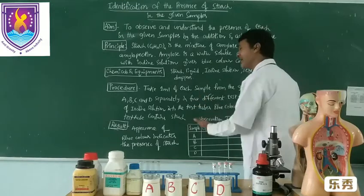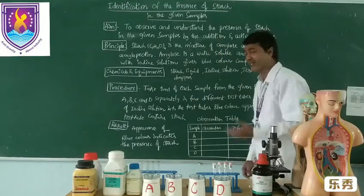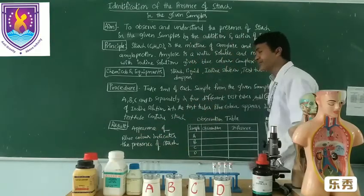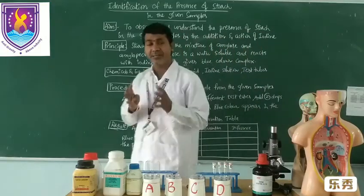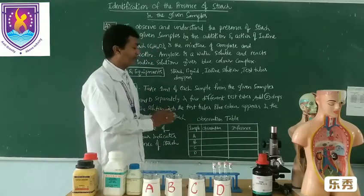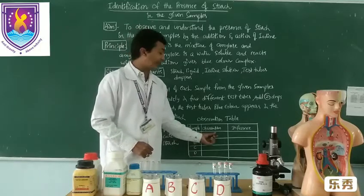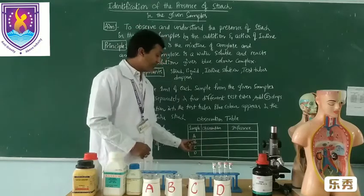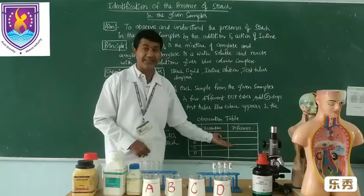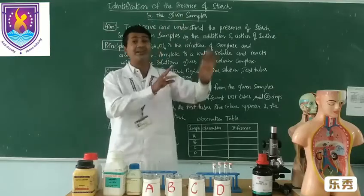The result: the appearance of blue colour indicates the presence of starch — that is the aim. To observe and understand the presence of starch. The appearance of blue colour indicates the presence of starch — that is the result. My students, after completion of your experiment and activity, you must fill in the observation table. The observation table must be filled during the practical examination. If sample A turns into bluish colour, mention that it contains starch. If B turns into bluish colour, then mention it. If there is no colour appearance, it means no starch is present — some other chemical is present. Our aim is to identify the presence of starch, not other chemicals.